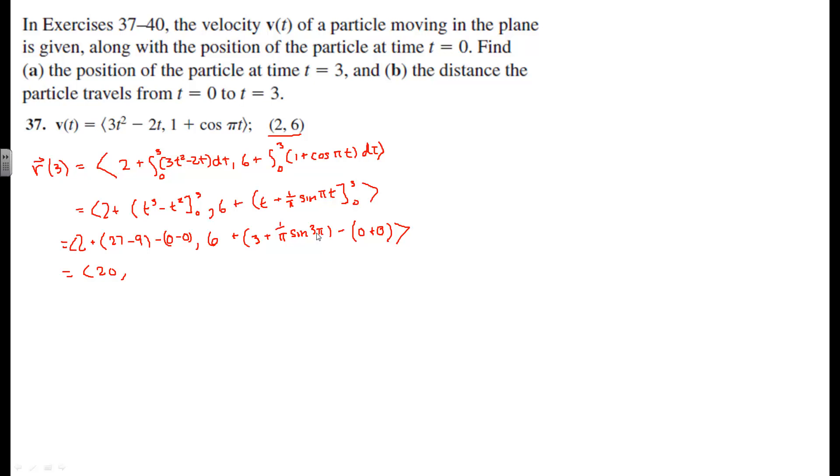And then at 3 pi, let's just do a quick sketch over here: 0, pi over 2, pi, 3 pi, 3 pi over 2, 2 pi. At 3 pi we're going to be back here at 0. So this is going to be 6 plus 3, which is 9. So at time 3, we're at position 20 comma 9.